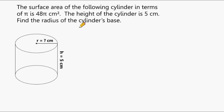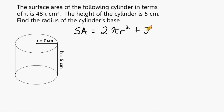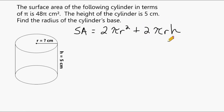The formula is: surface area equals 2 times pi r squared, plus 2 pi r h. This first part of our equation gives us the area of the two circular surfaces, and this part gives us the area of the lateral portion of our cylinder.